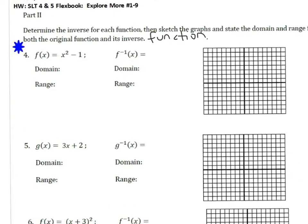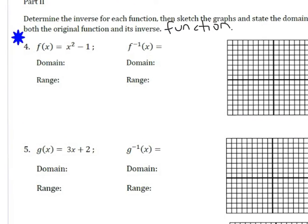So for number 4, x squared minus 1, that started as x, then we went x squared, and then we subtracted 1. So to go backwards for the inverse, we're going to add 1, and then square root. So the inverse function is going to be x plus 1 under a square root.